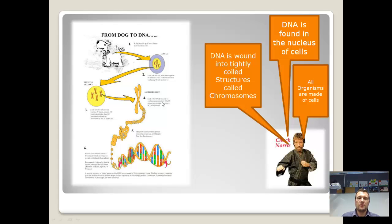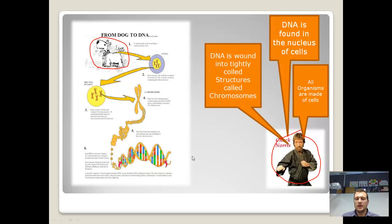The first thing that we need to be aware of is that all living things, for example a dog, are made of cells. There's a dog, made of cells. Here's Chuck Norris, he's made of cells, even though his cells are obviously stronger than our cells. I'm made of cells, cats are made of cells, monkeys are made of cells, plants are made of cells, bacteria are single cells. Everything that is a living thing is made of cells.